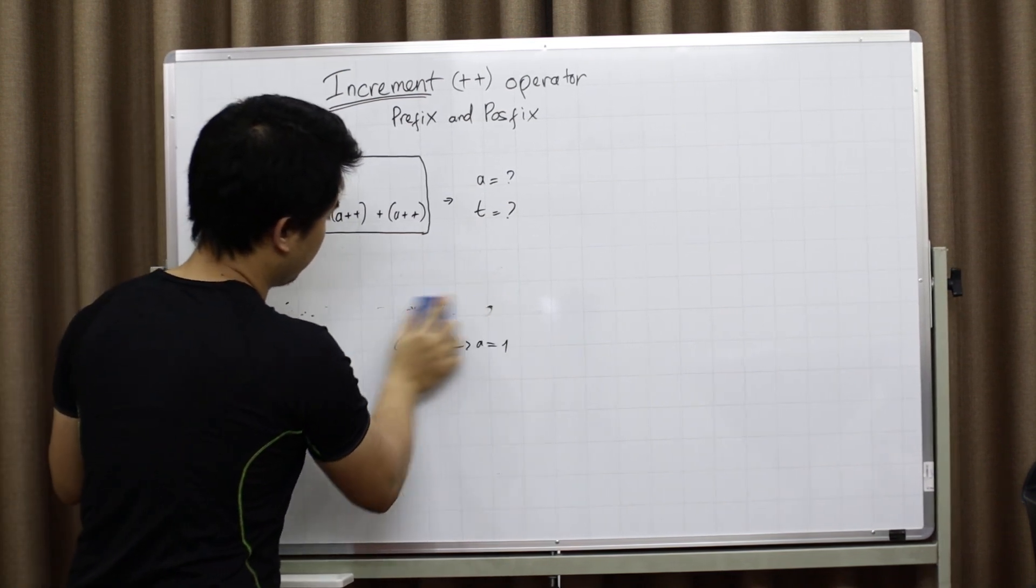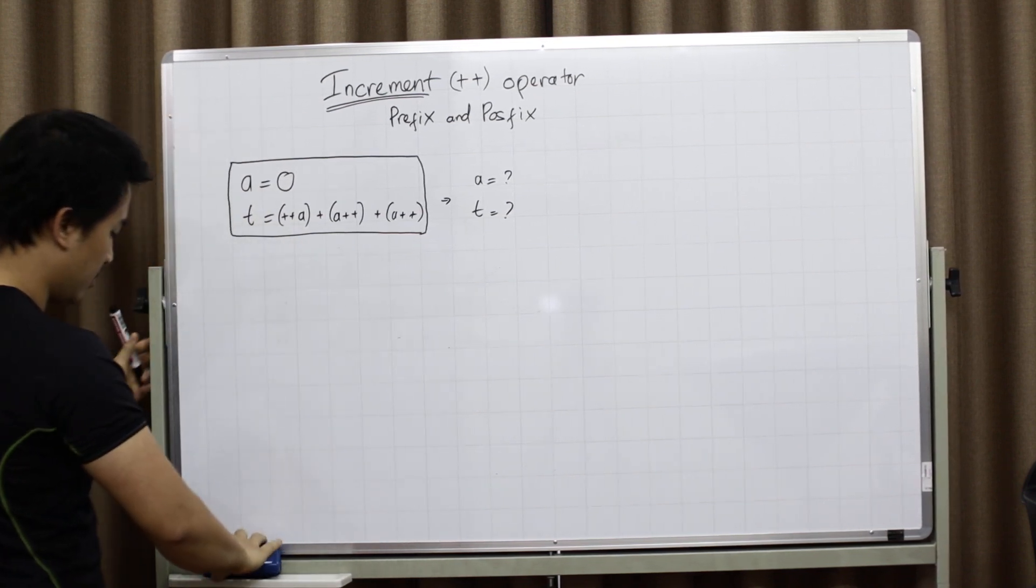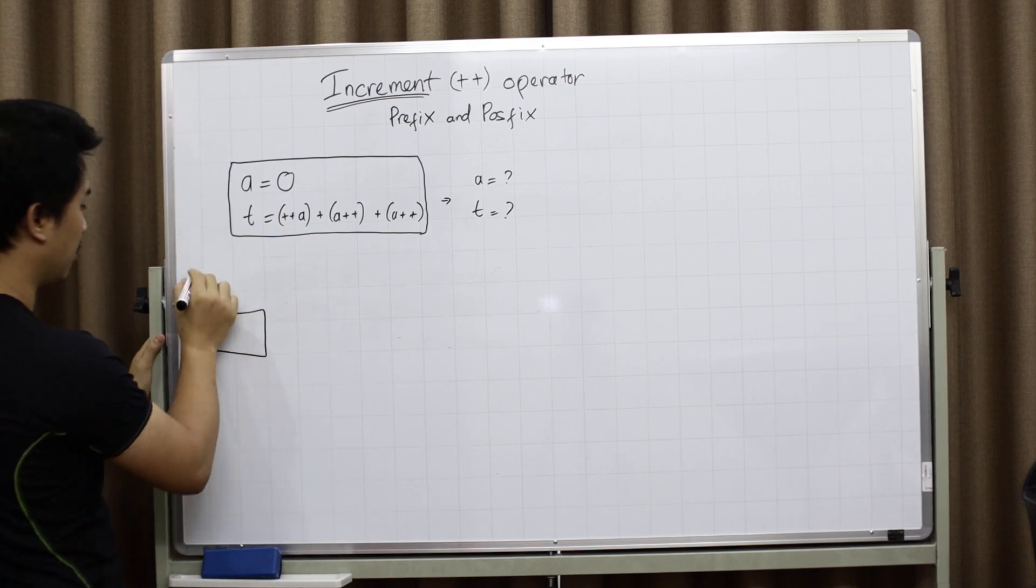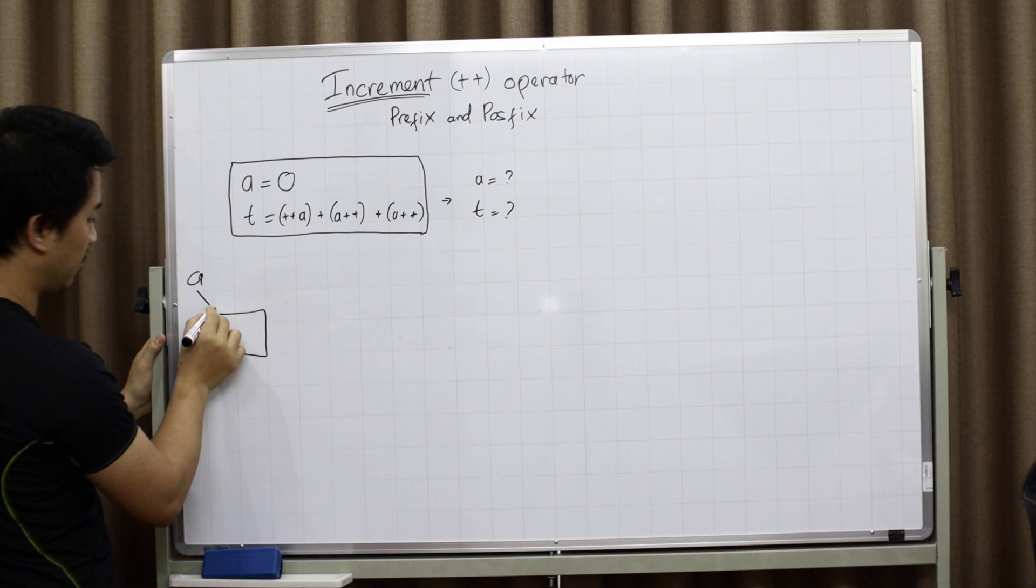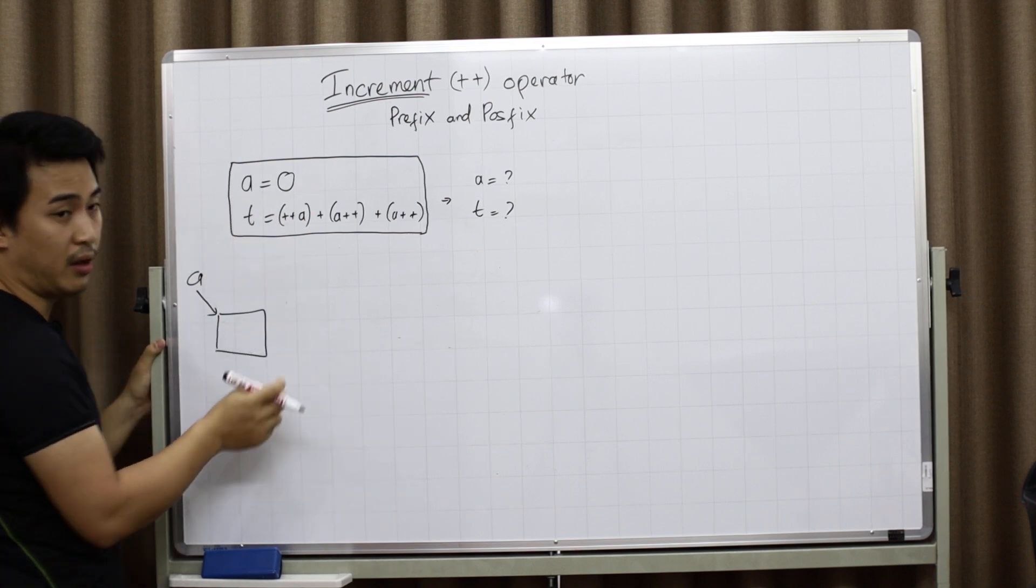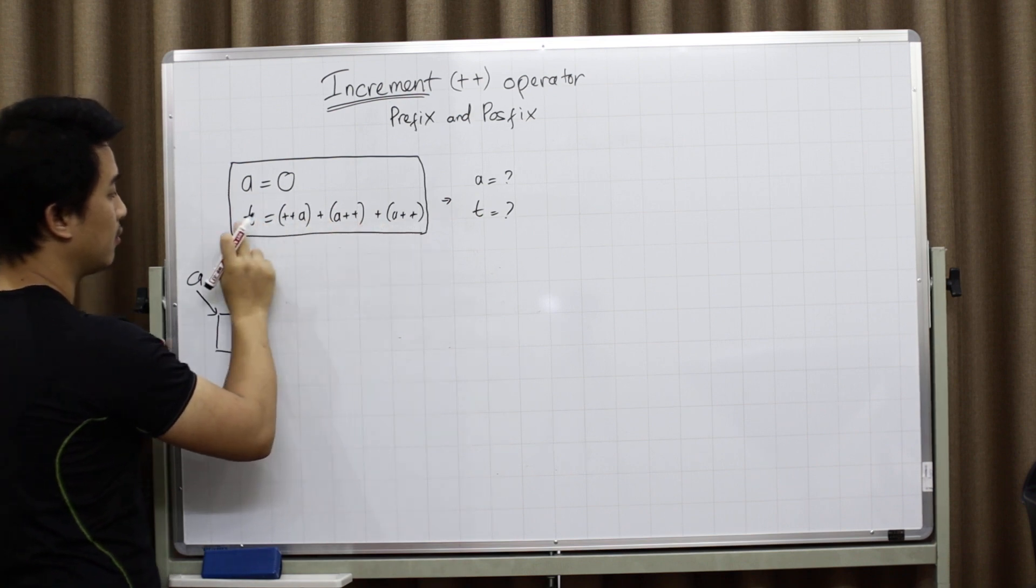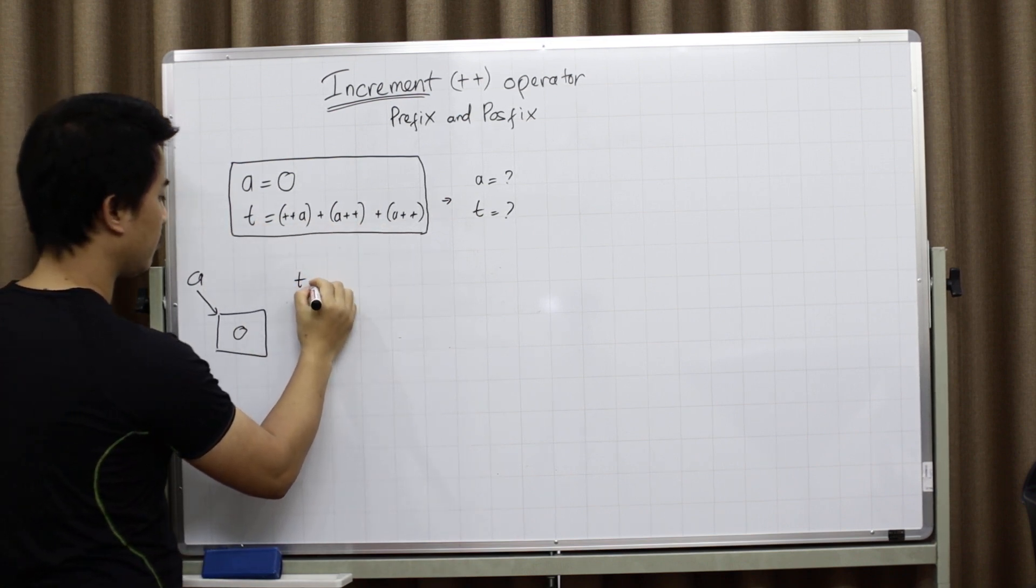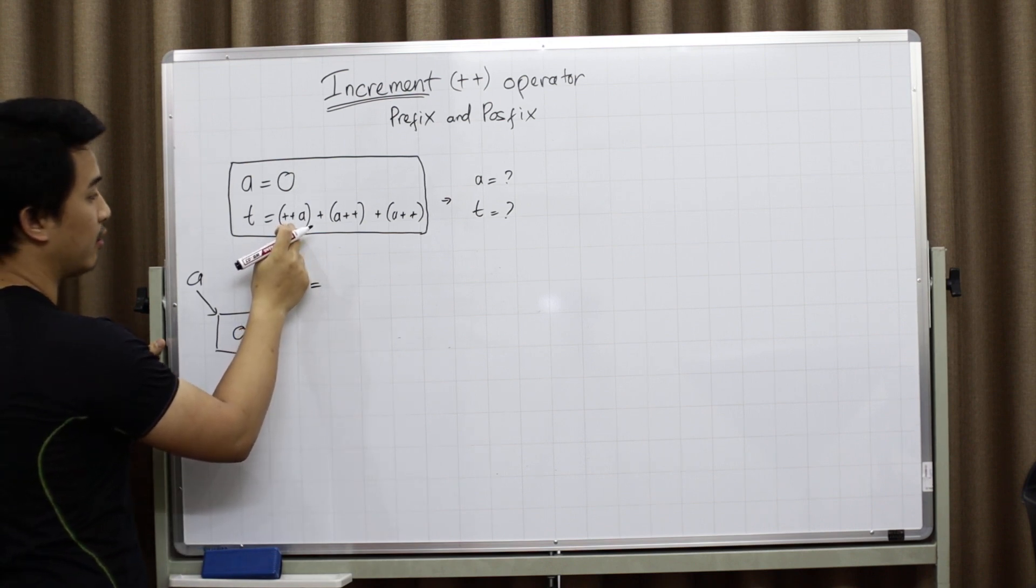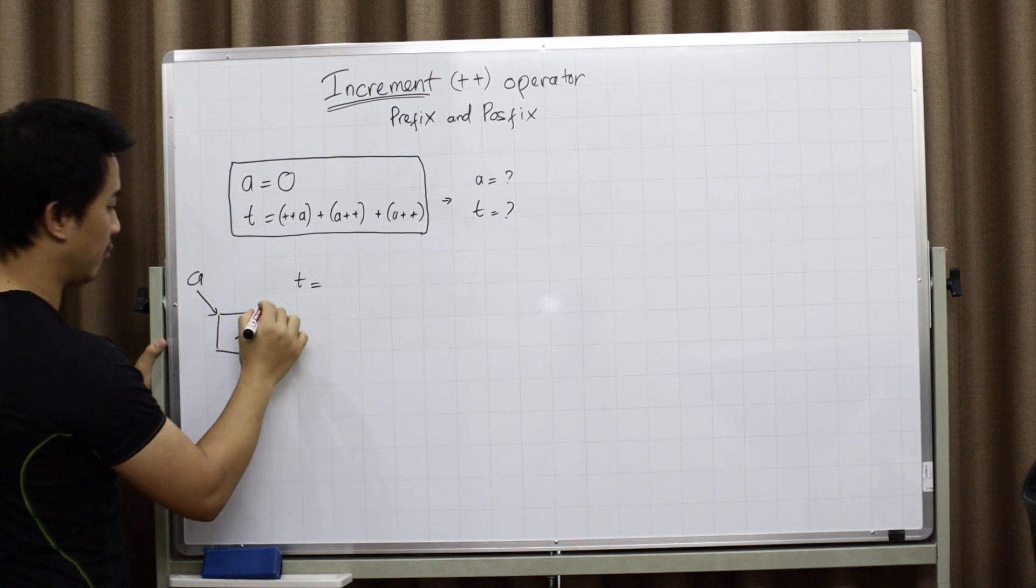So how it really works. This is how it really works. This is A in the memory. This is the memory area of A and it's assigned to 0. When it calculates this calculation, it meets the prefix operator. So it increases A and returns the value.